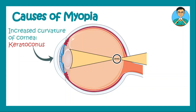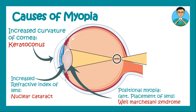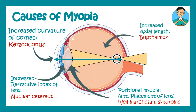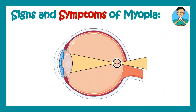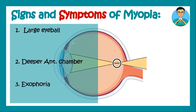The conditions that lead to myopia include: increased curvature of the cornea, as seen in keratoconus; increased refractive index of the lens, as in nuclear cataract; positional myopia, which is anterior placement of the lens as seen in Weill-Marchesani syndrome; or increased axial length of the eyeball, as seen in buphthalmos.